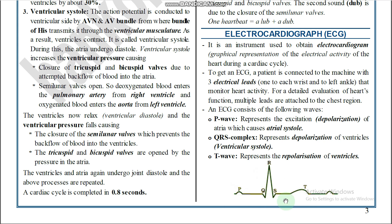The P wave represents depolarization of the atria, which causes atrial systole. The QRS complex represents ventricular systole — depolarization of the ventricles. The T wave represents ventricular relaxation — repolarization of the ventricles — also called joint diastole. So: P wave = atrial systole; QRS = ventricular systole; T wave = ventricular relaxation.